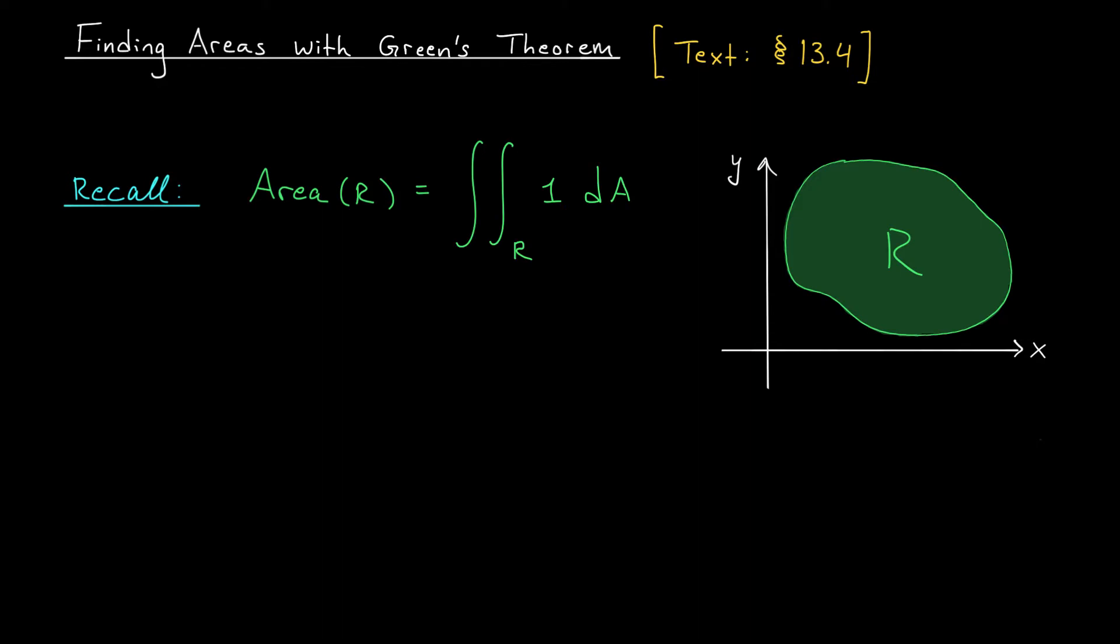We're going to explore this possibility today in the context of areas. So to start our discussion, let's suppose that we're trying to find the area of this 2D region R. In principle, we know we can compute that using a double integral, the double integral over R of the constant function 1 dA. But you can imagine that if this region is very complicated, maybe it's not type 1, maybe it's not type 2, and it can't easily be described using polar coordinates or some other change of variables, then setting up this double integral might be a real nightmare. If that's the case, what do we do?